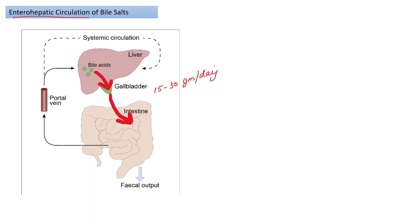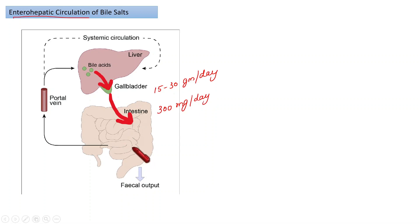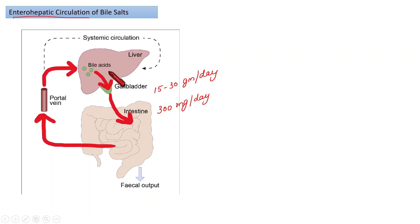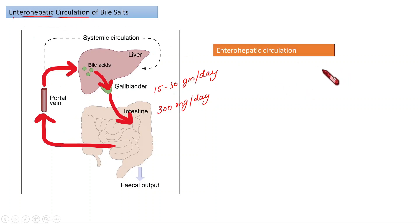Around 15 to 30 grams per day of bile reaches the intestine. Of that amount, around 300 milligrams per day is excreted along with fecal matter. The remaining balance amount comes back to the liver through the portal vein for another cycle, to help in the digestion and absorption of lipids. That circulation is called enterohepatic circulation.